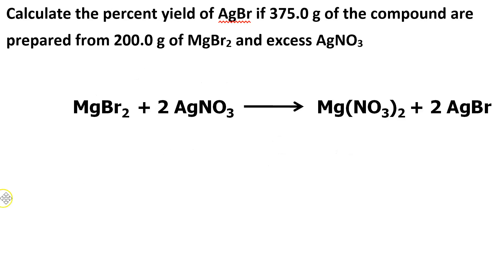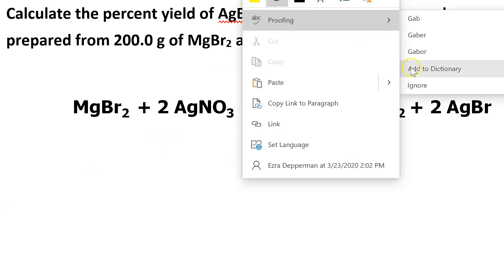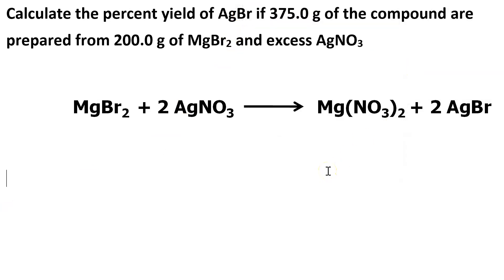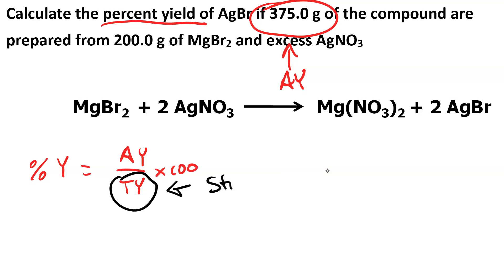So here's a percent yield question. When we react 200 grams of magnesium bromide with excess silver nitrate, we get 375 grams of silver bromide. So this 375 grams, that is our actual yield. And we're trying to find the percent yield. Percent yield equals actual yield over theoretical yield times 100. So we have to calculate theoretical yield, and we'll do that by stoichiometry.